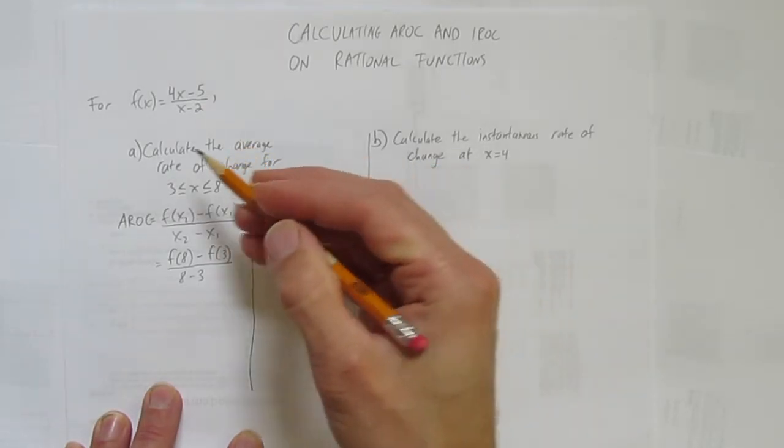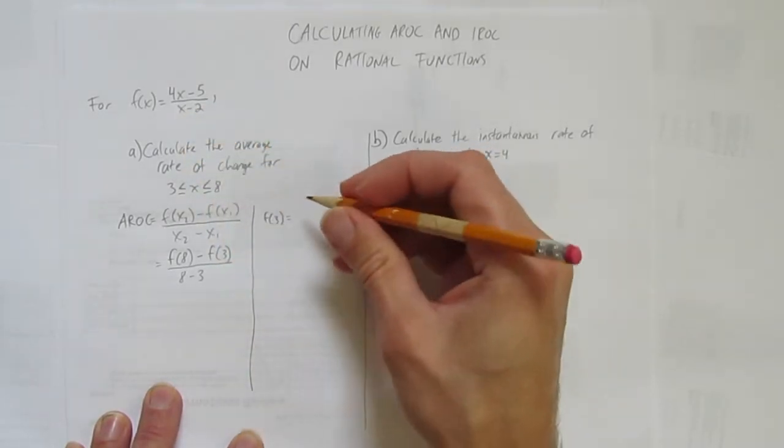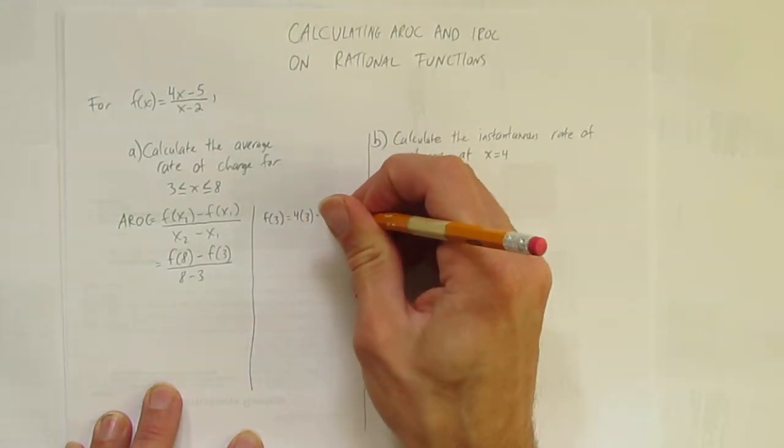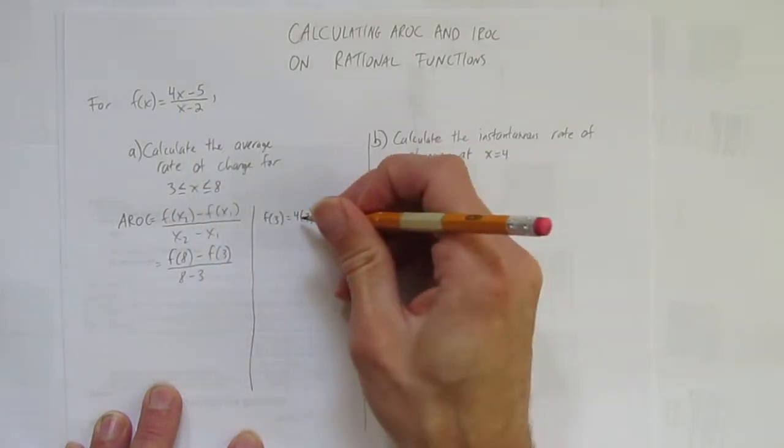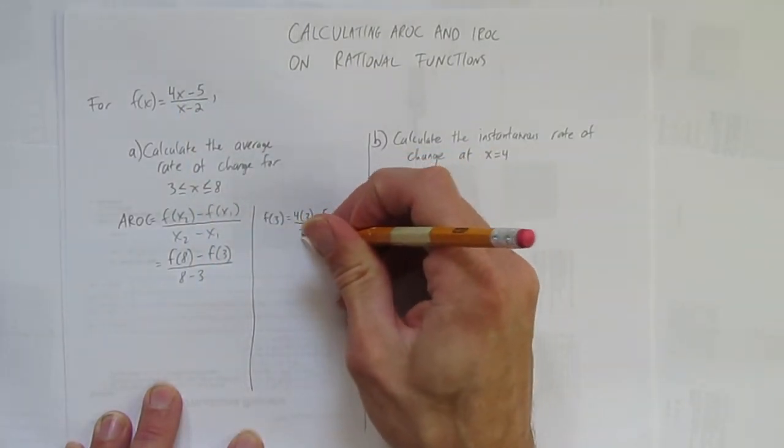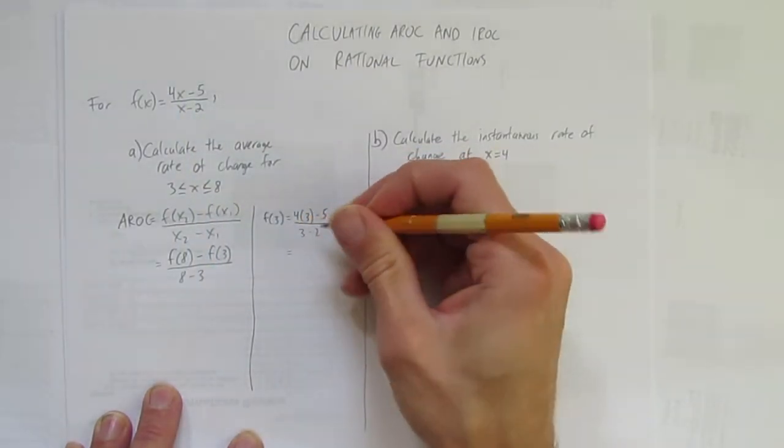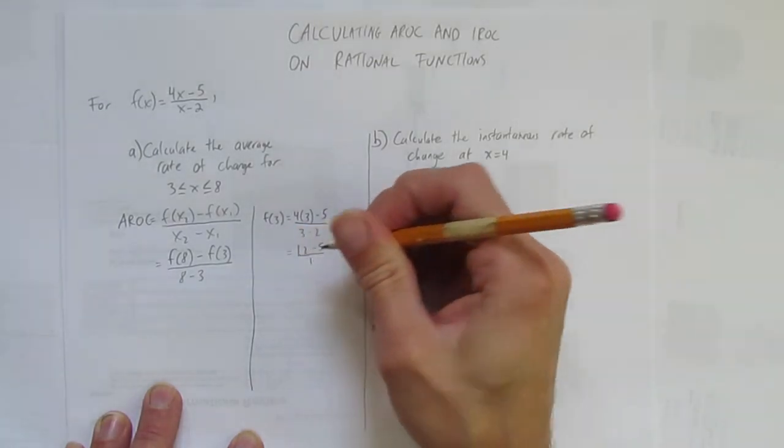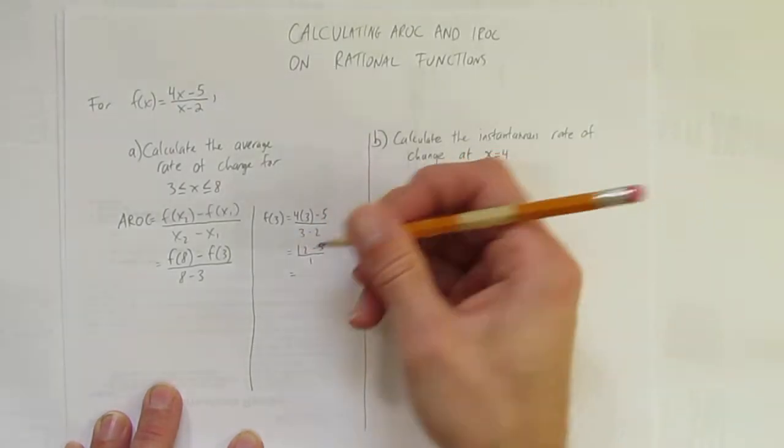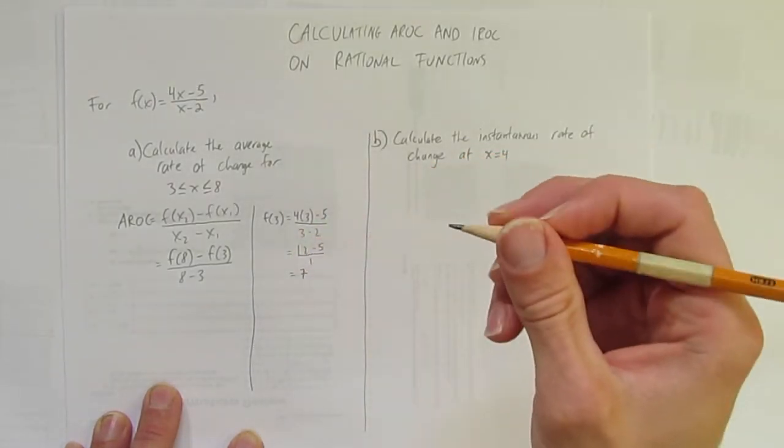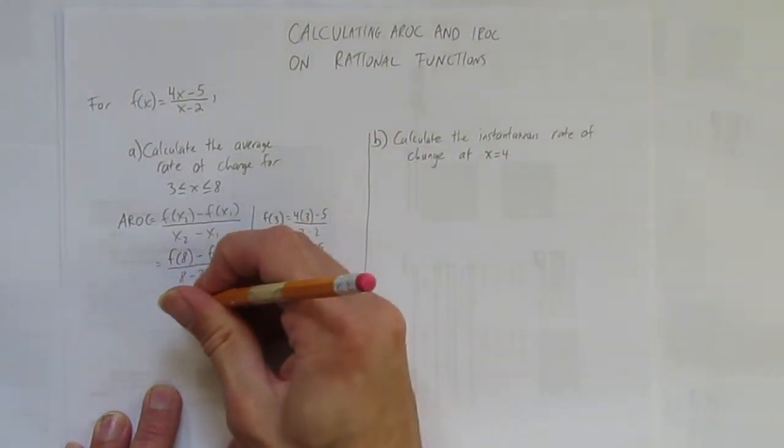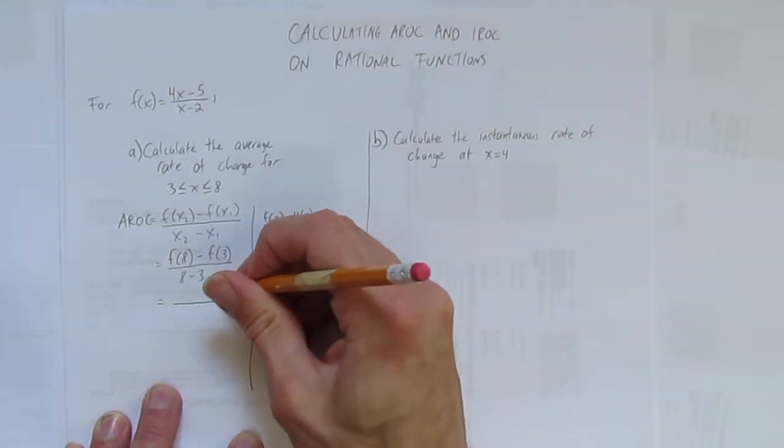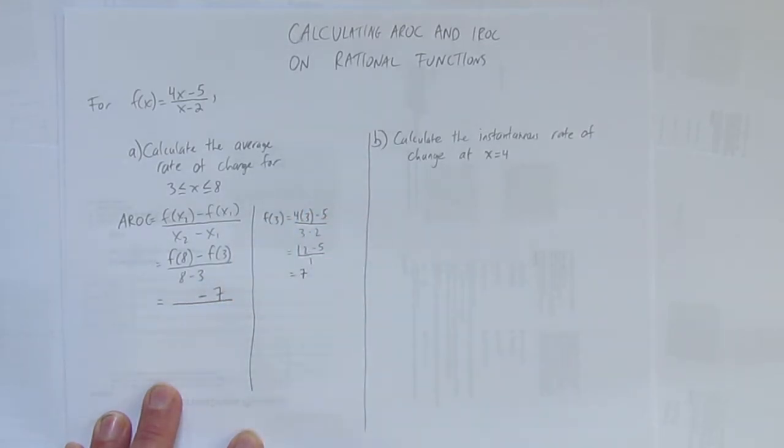I'm going to calculate first f(3). So to calculate that, I show the reader that I'm multiplying 4 times 3 minus 5. I'm just subbing 3 into this equation. 7 over 3 minus 2, which gives 12 - 5 over 1. That's pretty easy. 12 - 5, 7 over 1 is just 7. That's going to go in my AROC work here for f(3). That's a 7. I'll put this minus here so I don't forget.